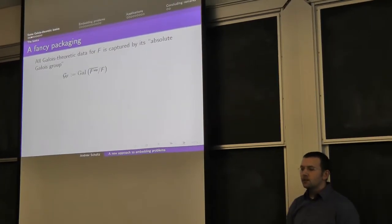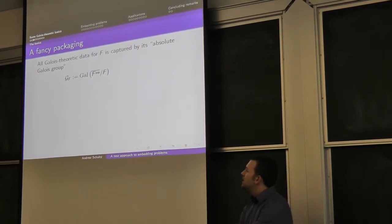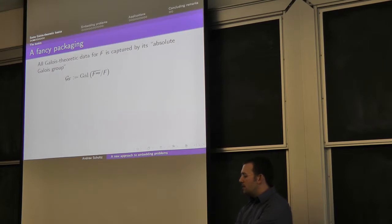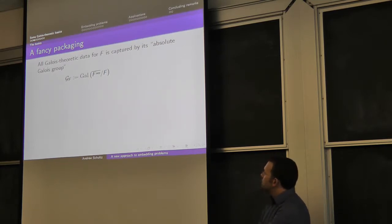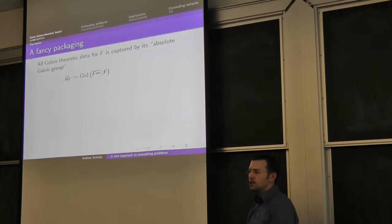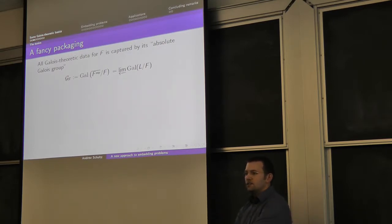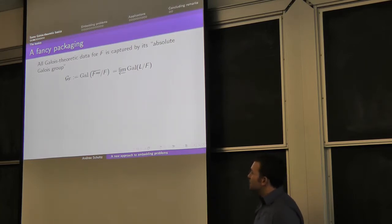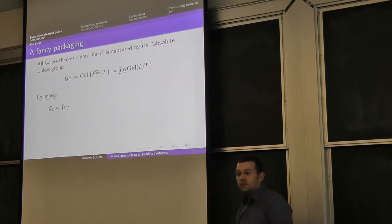The Galois theory of a field captures a lot of interesting things. There's a fancy contraption called the absolute Galois group that captures everything simultaneously. You take your field F and look at a separable closure, or equivalently take a limit over all finite extensions of that base field. For example, the complex numbers are algebraically closed so their absolute Galois group is trivial. The reals give Z/2Z since you just go up to C.